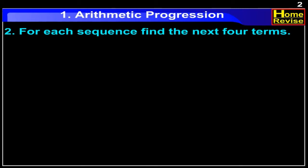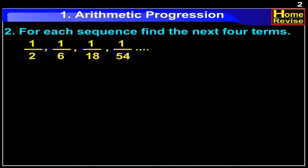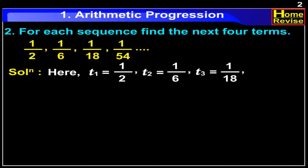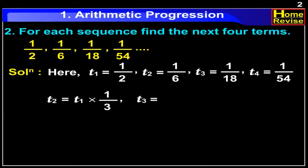For each sequence, find the next 4 terms: 1/2, 1/6, 1/18, 1/54 and so on. Here, T1 is equal to 1/2, T2 is equal to 1/6, T3 is equal to 1/18 and T4 is equal to 1/54. If you observe all these terms carefully, you will notice that T2 is equal to T1 into 1/3, T3 is equal to T2 into 1/3 and T4 is equal to T3 into 1/3.